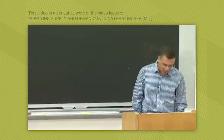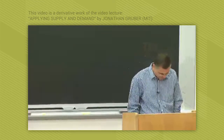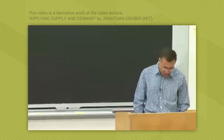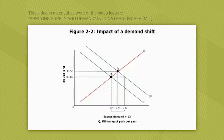So our initial equilibrium — we just made up some numbers here — is at 220 million kilograms of pork a year and a price of $3 a kilogram. That was the initial equilibrium, the point where demanders and suppliers were happy.